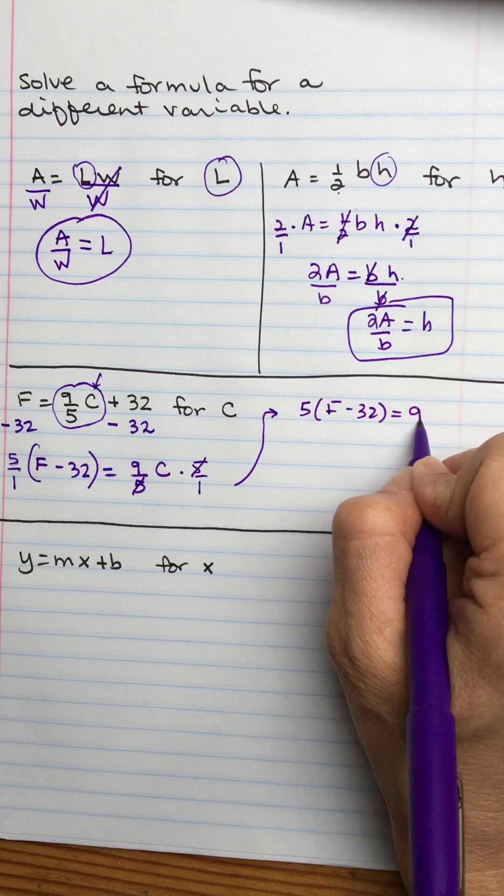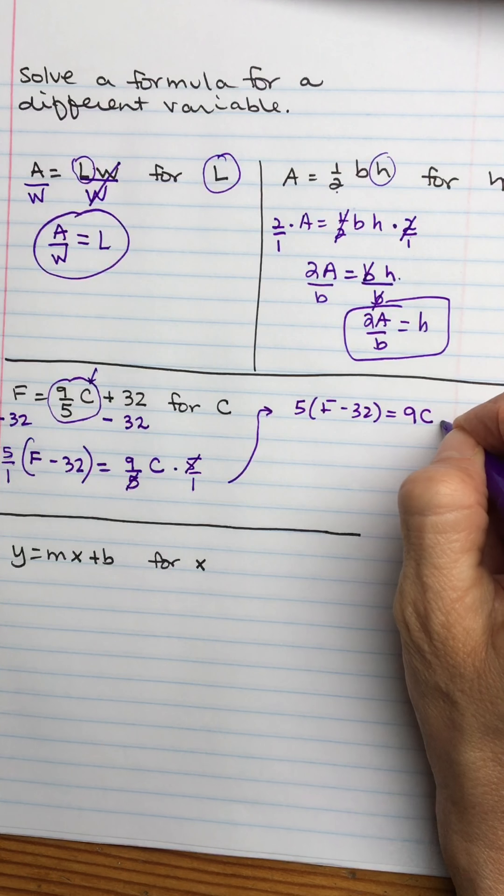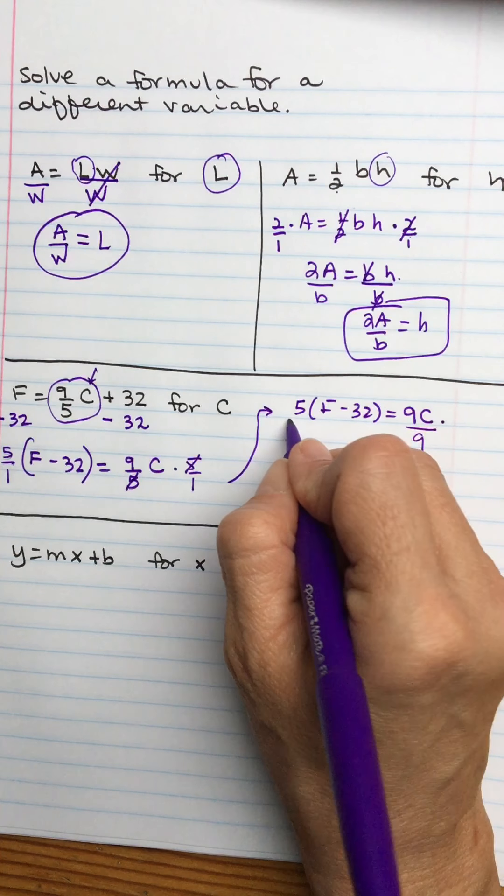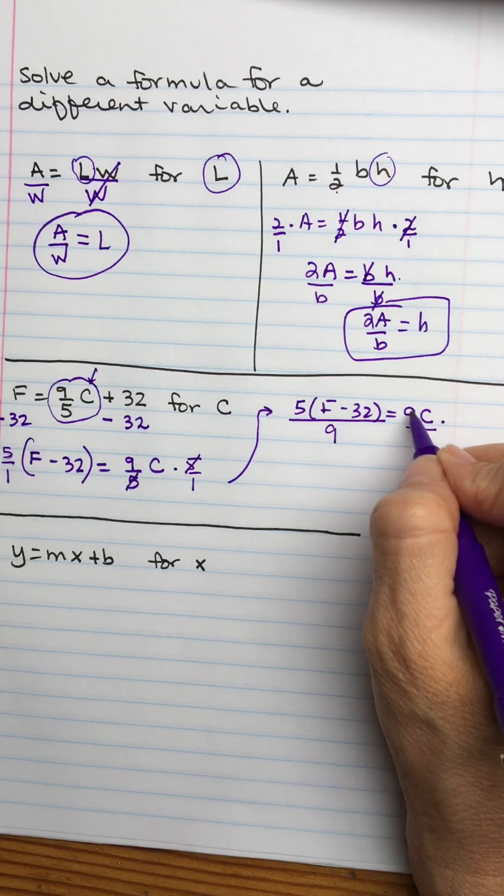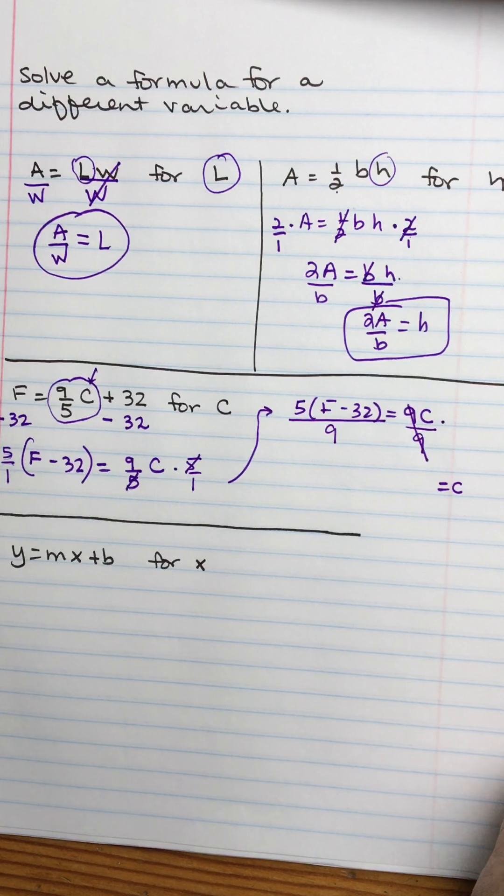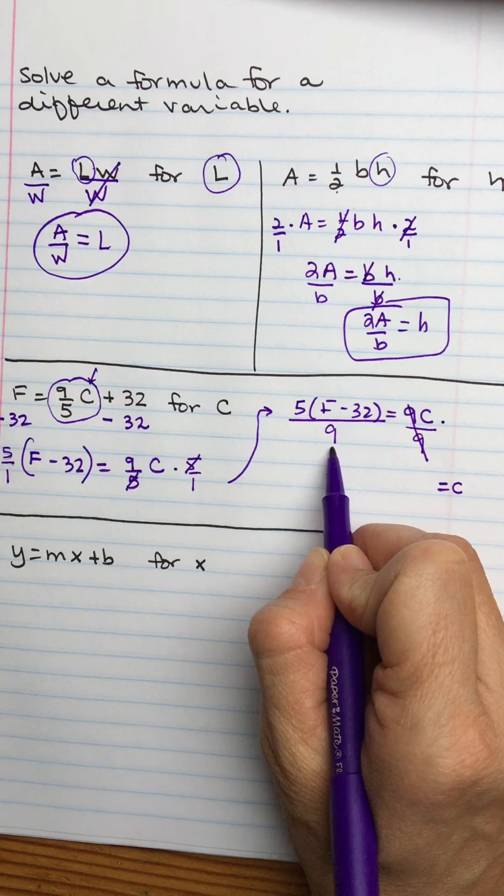Let's go back over here and we'll clean up that right side by canceling the 5s. So now, coming up and over a little bit, I have 5 times F minus 32 equals 9C. So then to get rid of the 9, I would divide the right side by 9 and the left side by 9. On the right, they cancel. Gets me the C all by itself.